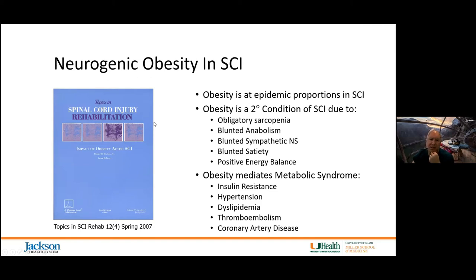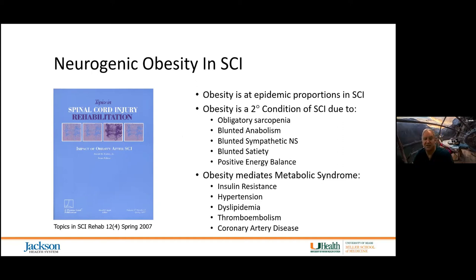Next month there will be a new issue of Topics in Spinal Cord Injury Rehabilitation discussing neurogenic obesity as we understand it now, including body composition changes, diabetes, hypertension, dyslipidemia, upper extremity overuse associated with neurogenic obesity, neuropathic pain, and obstructive sleep apnea. This issue will also cover energy expenditure, dietary management strategies, and exercise strategies. The Lynn Rehab Center is sponsoring this issue, and we anticipate it will have a huge influence on the field.